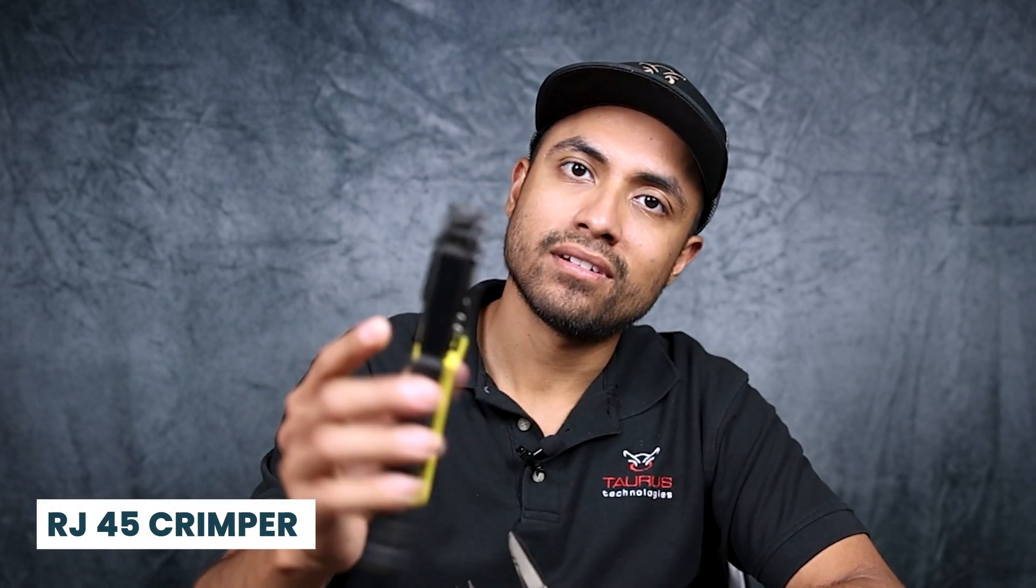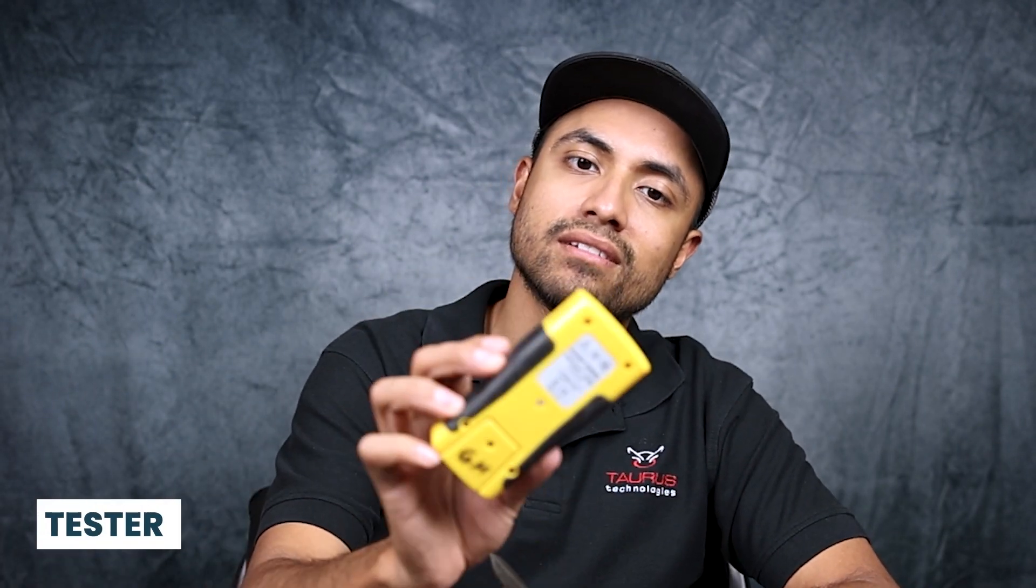You'll need a small screwdriver of some sort, something with a little bit of a rounded edge, an RJ45 crimper or crimping tool, and a tester to make sure you did it right.